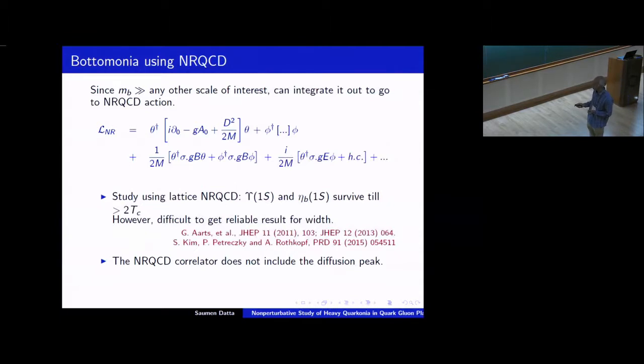So study using lattice NRQCD has also happened something like three to five years back by various people. The results agree with what I just now showed from the relativistic action, that you find a pretty strong peak up to temperatures above 2Tc. However, once again, even with NRQCD, it's difficult to get reliable results for the width. And the NRQCD correlator does not even include the diffusion peak, because there what you're interested is in fluctuation about 2m, the mass of twice the mass of the bottom.